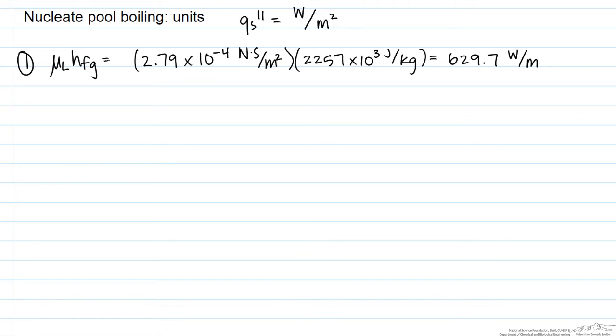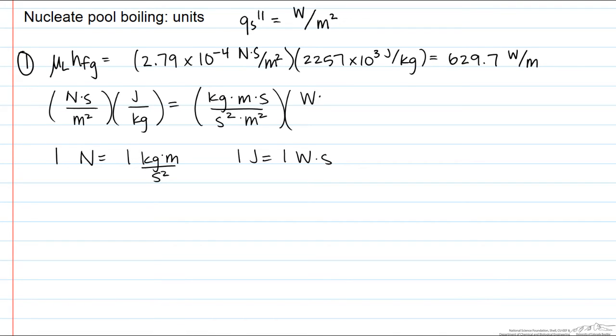If you take a look at the first term, what you'll find is you have newtons per meter squared times joules per kilogram. One newton is a kilogram meter per second squared, and one joule is a watt second. And so, when we do the canceling for this particular term, we end up with units of watts per meter.